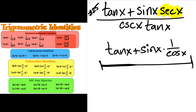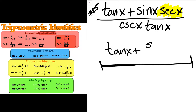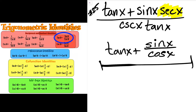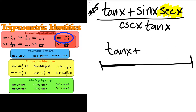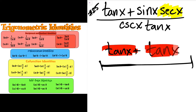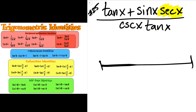Something else that catches my eye is that sine times 1 over cosine x will simplify into sine x over cosine x. And if I look at my quotient identities, I see that sine x over cosine x simplifies to tangent x. So this all simplifies into tangent x. Now I notice that I have two tangent x's, and that will simplify to 2 times tangent x.